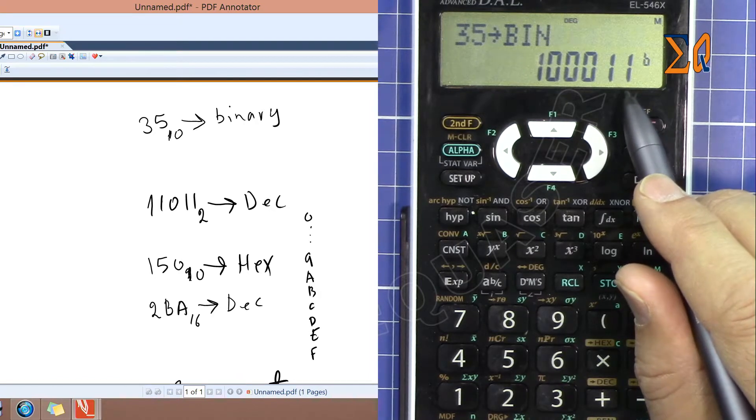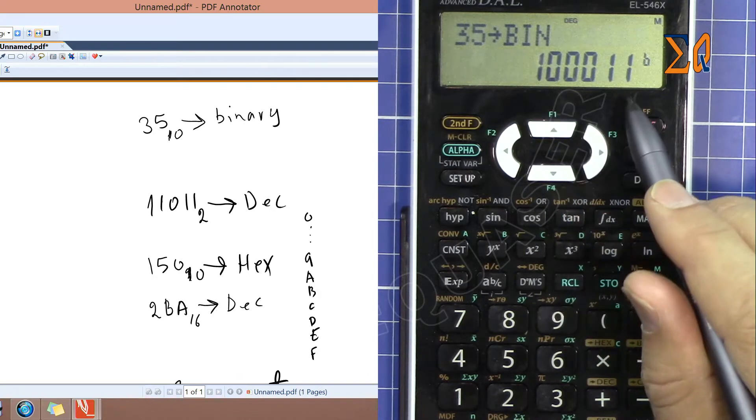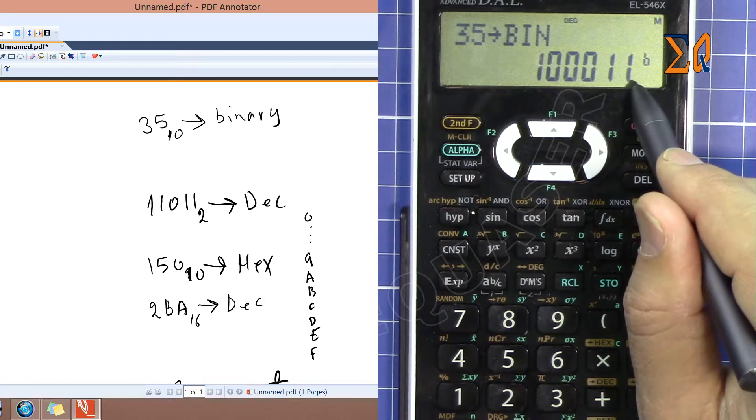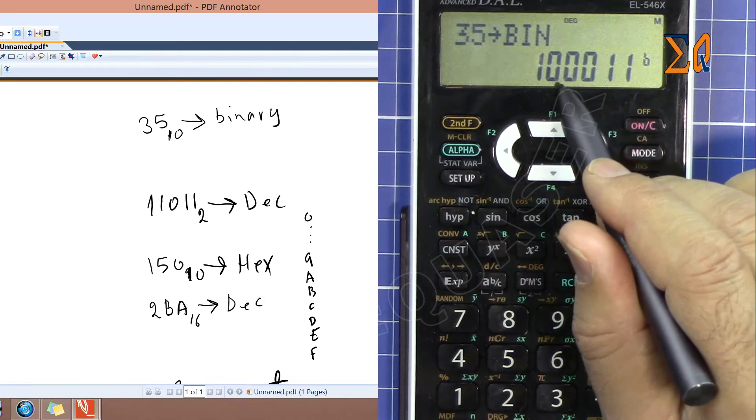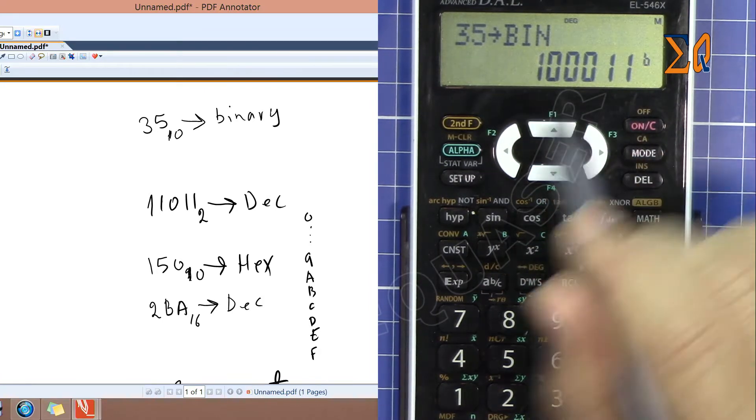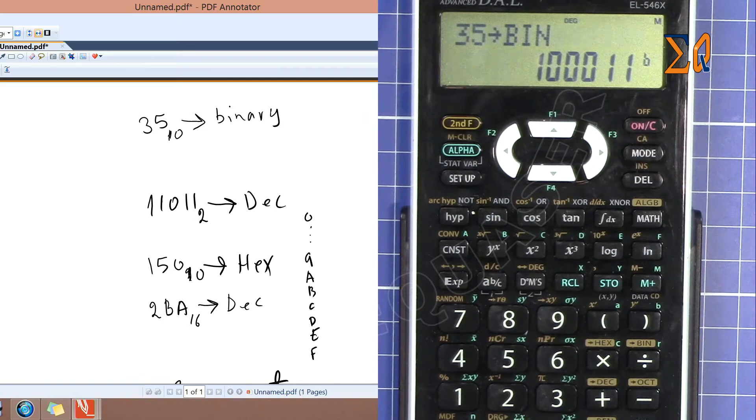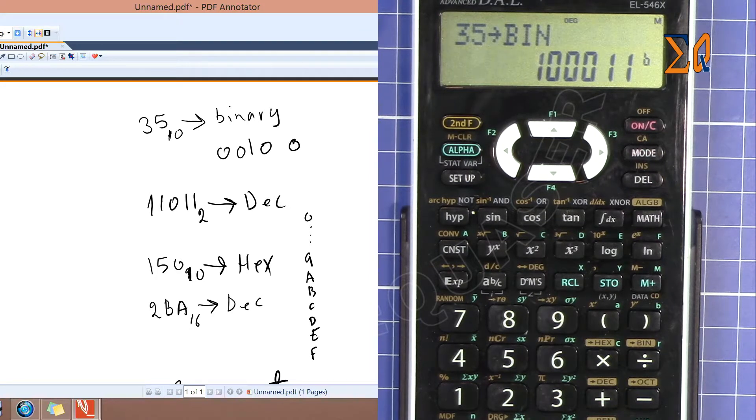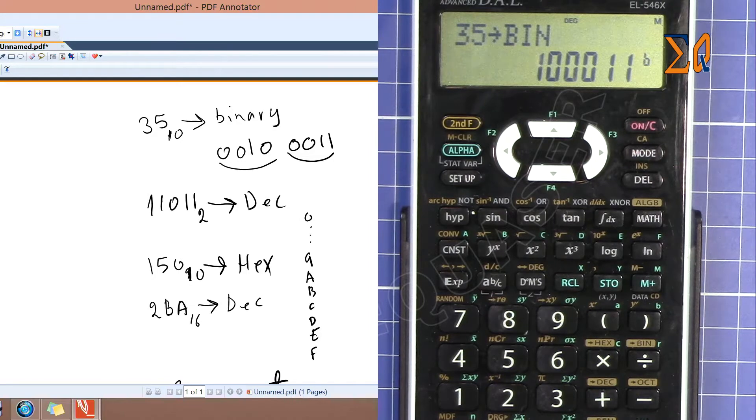If your instructor wants you to represent it at eight bits, from the right just count four bits - it's up to here - and then we have two zeros on the left. So it would be zero zero one zero and then another four bits zero zero one one. So it will be represented as two groups of four bits.